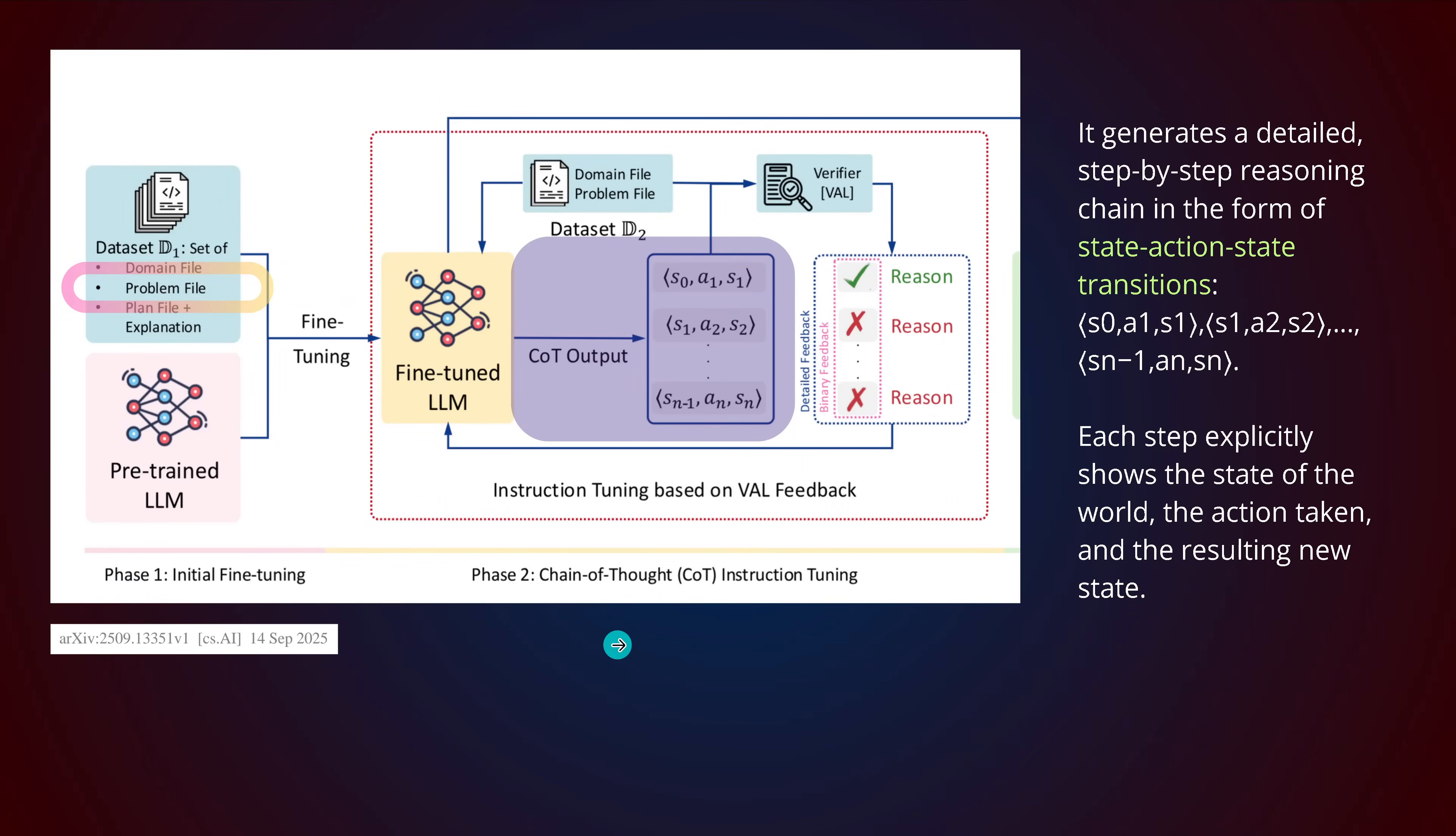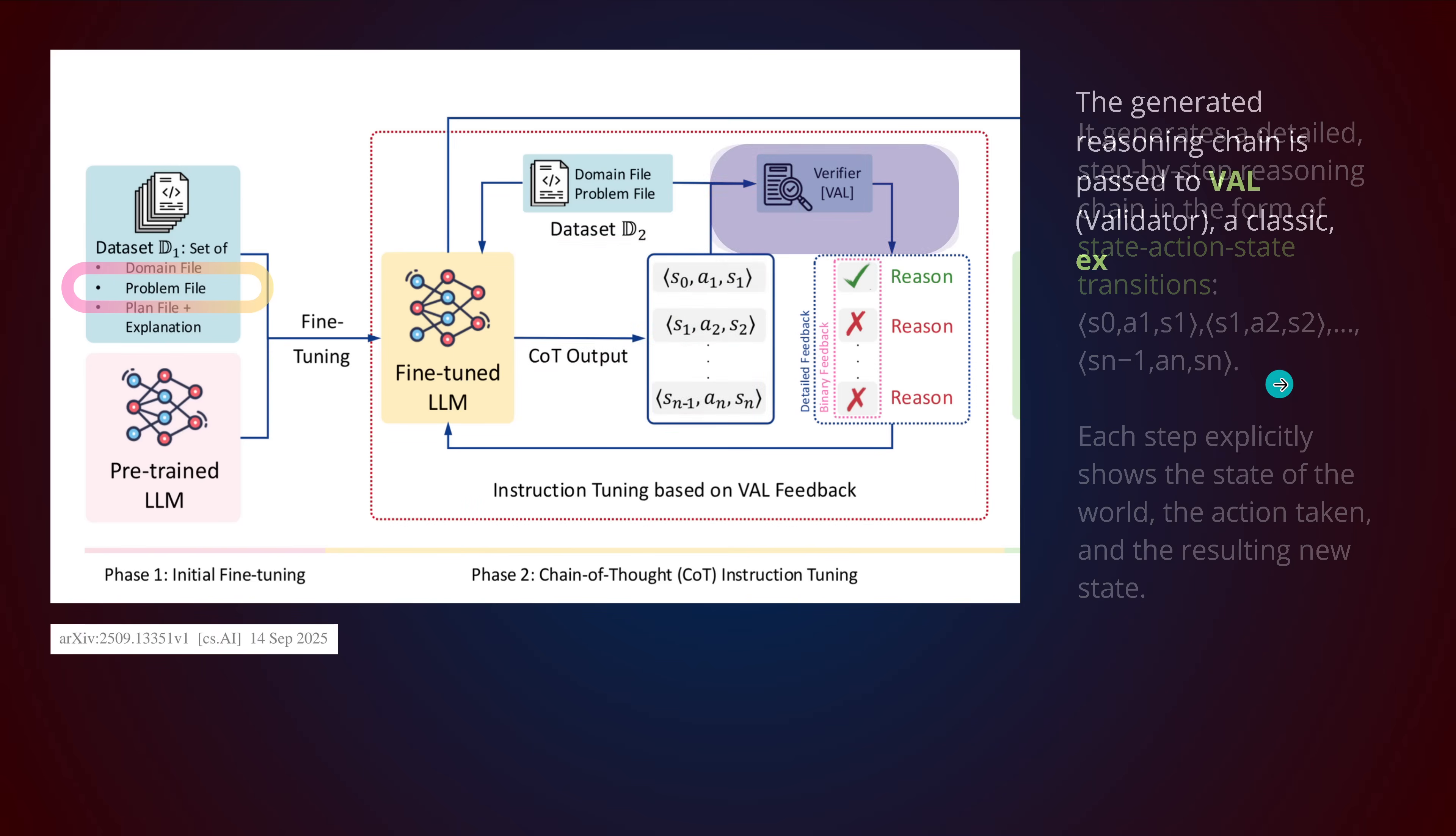Now let's come to the main innovation. We have a fine-tuned LLM from this dataset. We take this fine-tuned LLM and in the first step, it generates a detailed step-by-step reasoning chain in the form of state-action-state transitions for a given complexity. Each state explicitly shows the state of the world, the action taken, and the resulting new state.